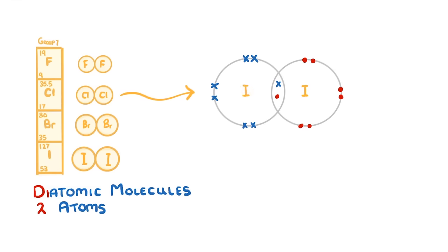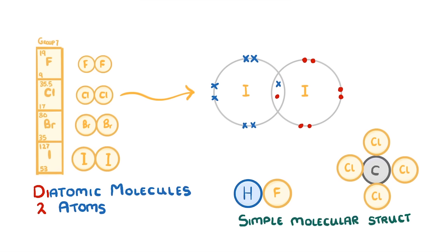Halogens can also form covalent bonds with other nonmetals, such as hydrogen or carbon, to form compounds like hydrogen fluoride or carbon tetrachloride. These compounds are known as simple molecular structures, and we take a closer look at them and the covalent bonds that they use in another video.